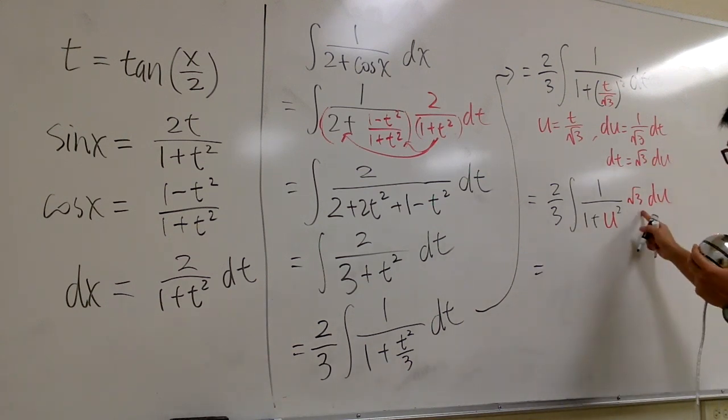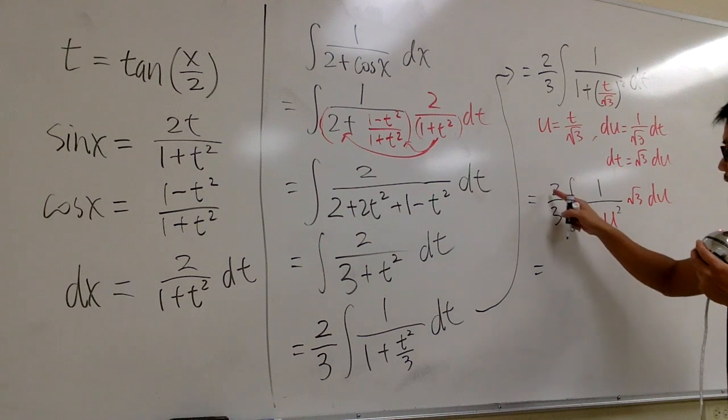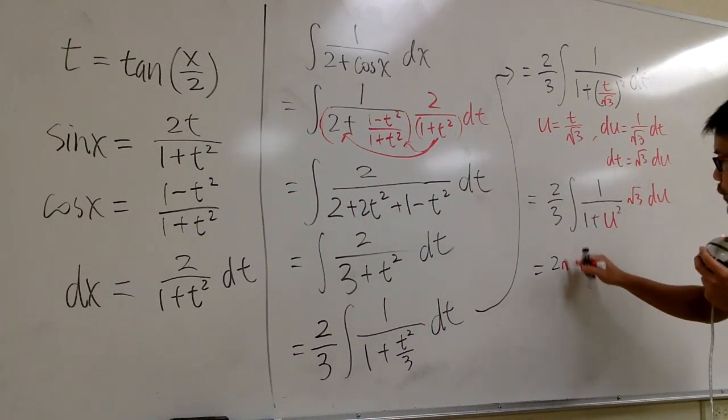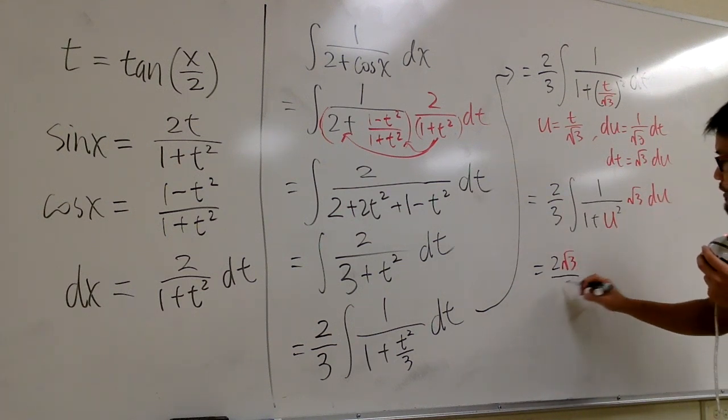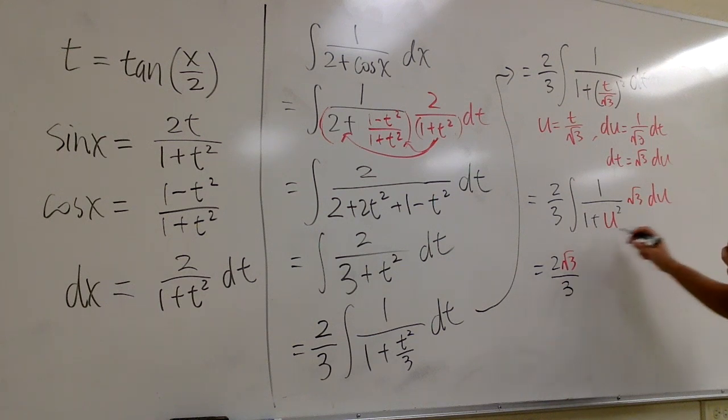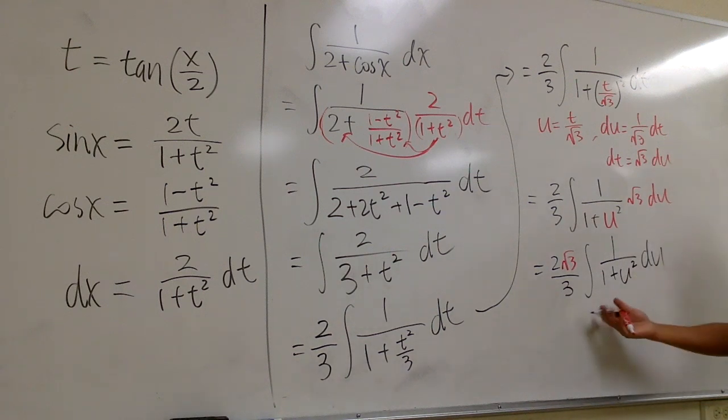And what can we do next? Well, constant multiple, this should be out in the front. So, we have 2, and then the square root of 3, over 3. And then the integral, let me just write it down again. Integral 1 over 1 plus u square, du.